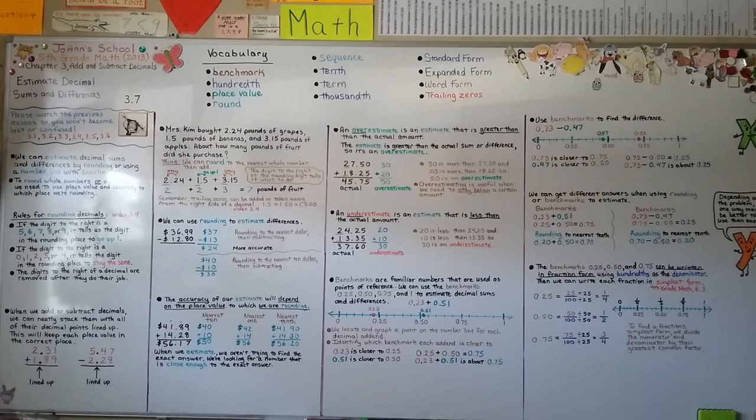Make sure your decimal points are lined up, and be careful with trailing zeros — they don't change the value of a decimal when added to the right side. Our next lesson, 3.8, we're going to actually add decimals stacked up with their decimal points lined up. I hope to see you there. Have a great day — stay strong, stay safe. Bye!